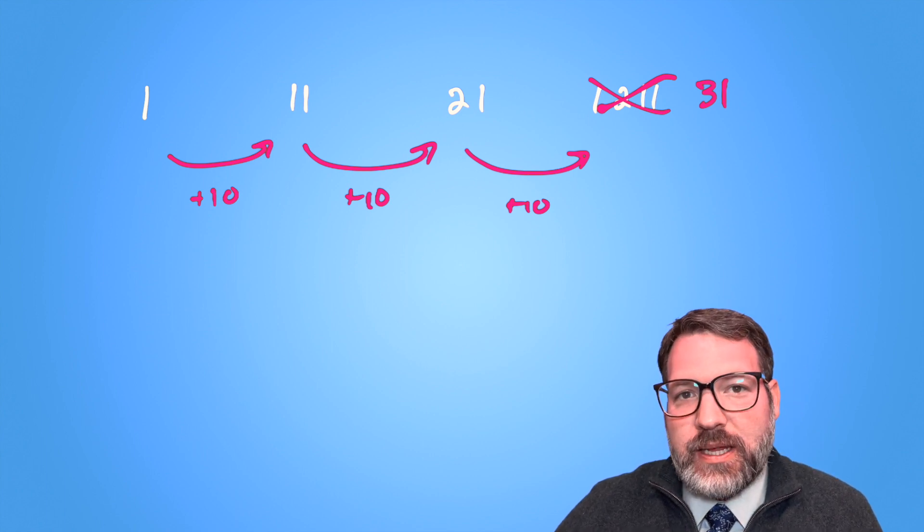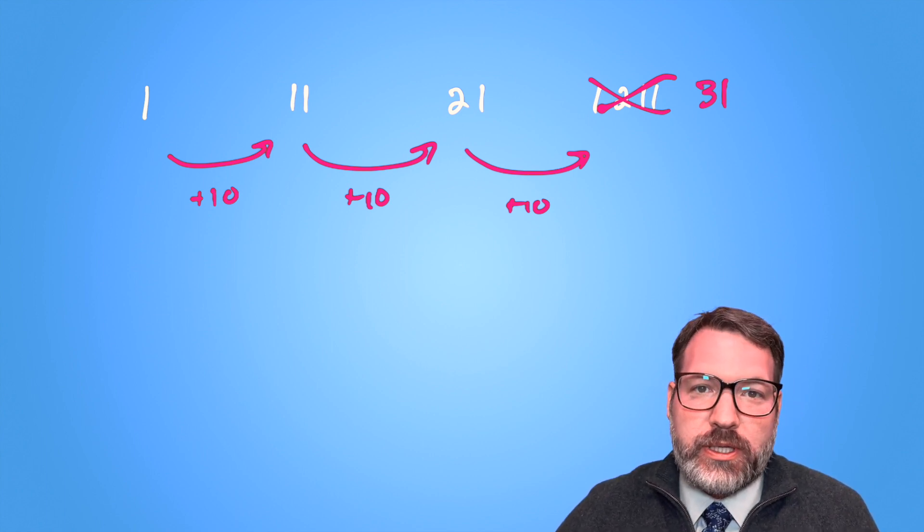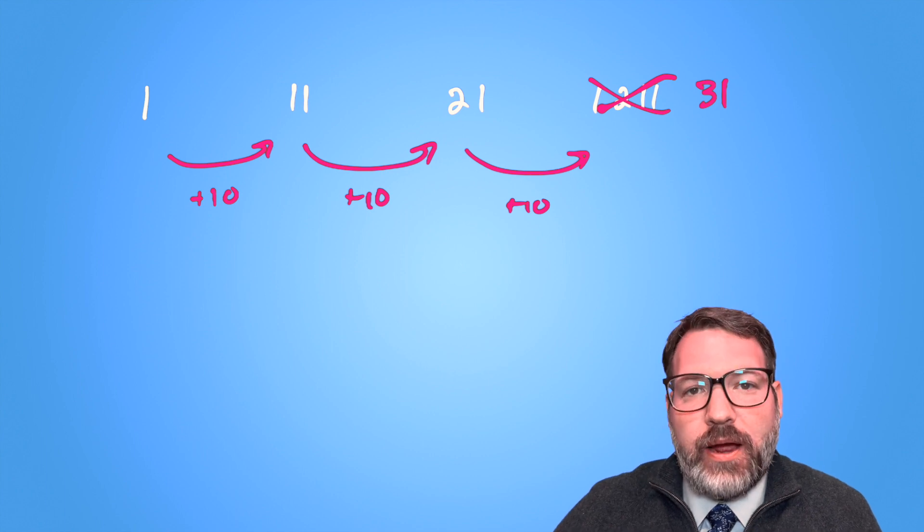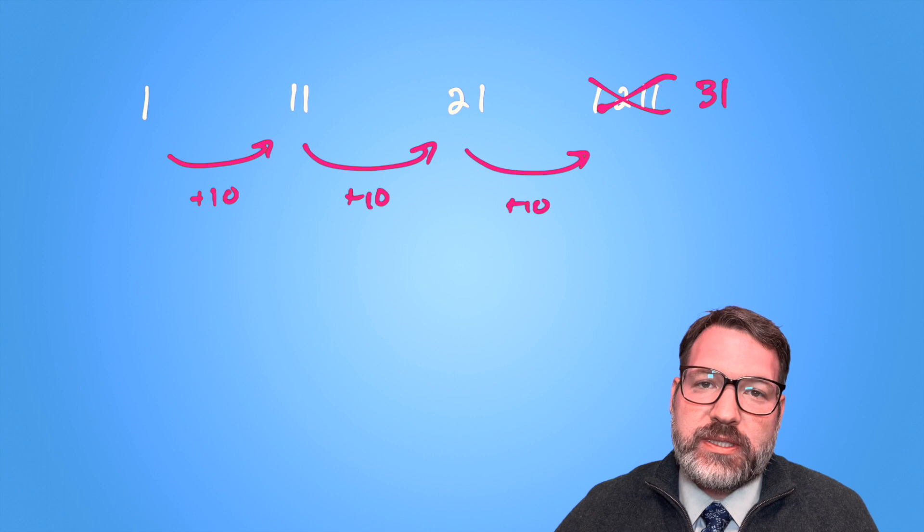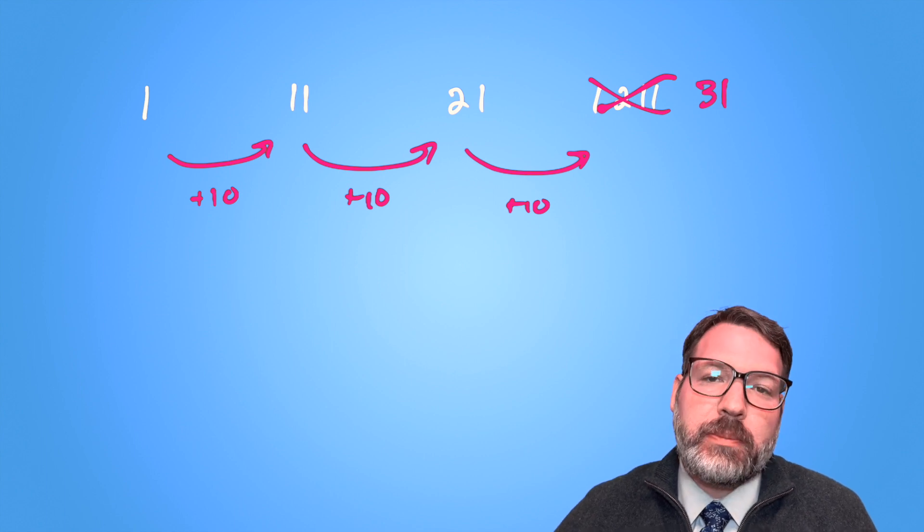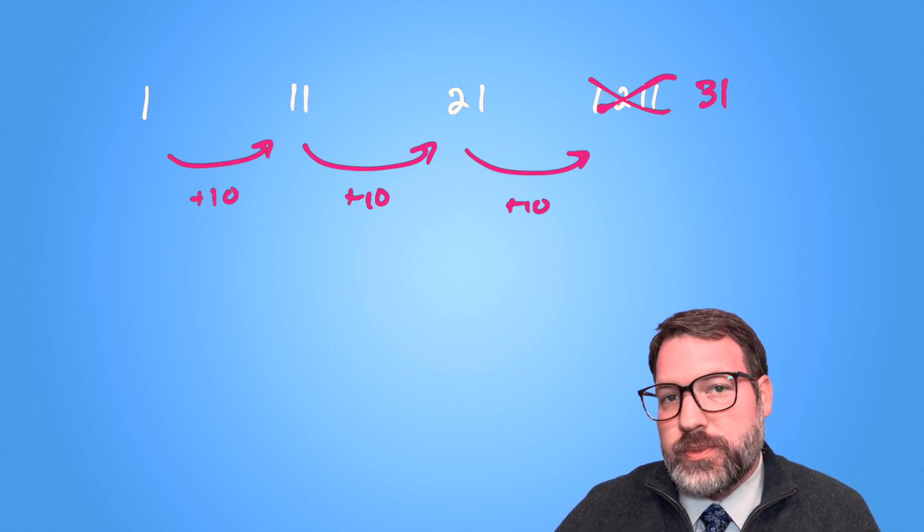If I'm adding 10, adding 10, adding 10, that is very much an operational sequence. In fact, that's what we call an arithmetic sequence, a sequence where the terms get bigger or smaller by the same amount each time. That is, there's some kind of common difference between the terms in the sequence.